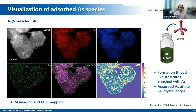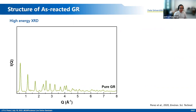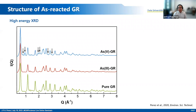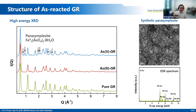When we look at the high-energy X-ray diffraction pattern of our reacted solids, for pure green rust and arsenic(III)-reacted green rust, we don't see any other iron oxyhydroxide phase aside from green rust. But for the arsenic(V)-reacted green rust, where we observe the formation of these thread-like structures, we can see additional reflections. These reflections correspond to the phase pyrosimplicite, which is an iron(II) arsenate. By making a synthetic pyrosimplicite corresponding to the conditions of the reacted mixture, we confirm thread-like structures and EDX spectra showing iron and arsenic signals.